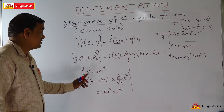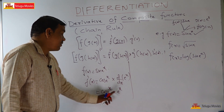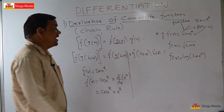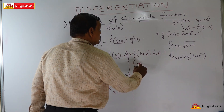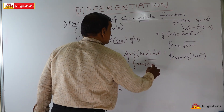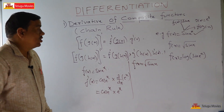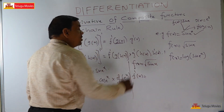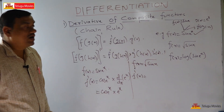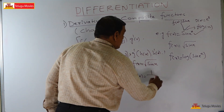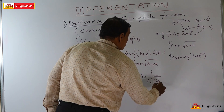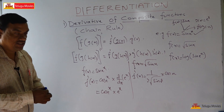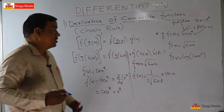Now take another function f of x is equal to root of sin x. The derivative of root x is 1 by 2 root x, so this becomes 1 by 2 root of sin x. Then find the derivative of sin x, which is cos x. So f dash of x is cos x by 2 root of sin x.